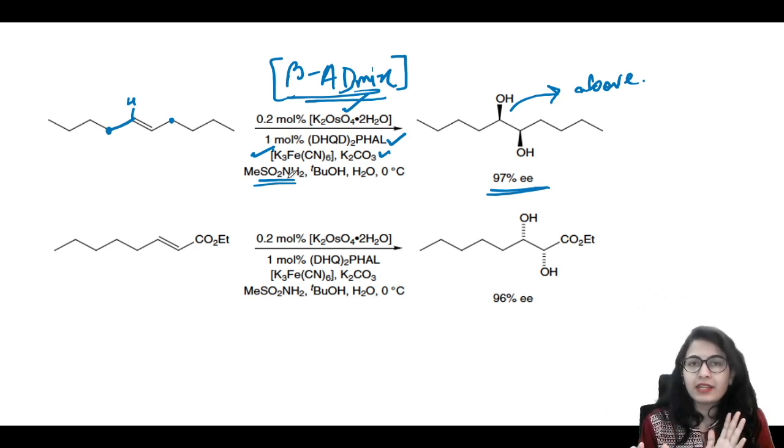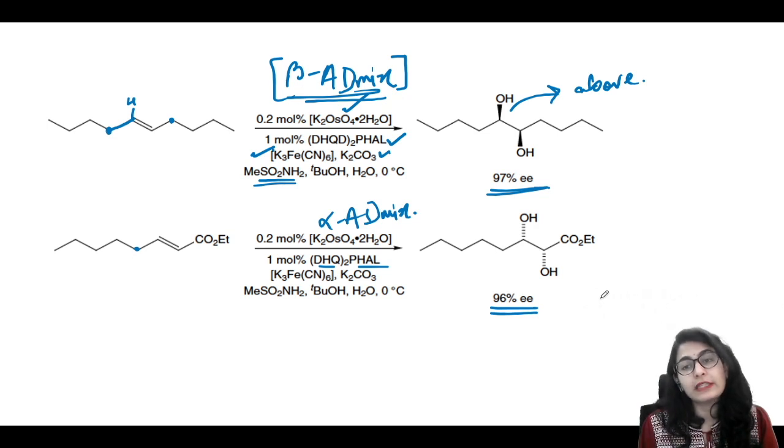Next, we have CH₂ and CO₂Et groups. Here we have (DHQ)₂-PHAL, the alpha-AD-mix. That's why we're going to get 96% enantiomeric excess with the diol formed below.